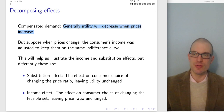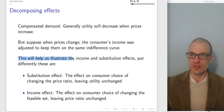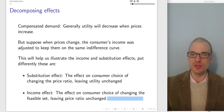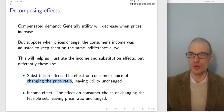We introduced compensated demand in the previous lecture. Generally, utility decreases when the price increases. Suppose when prices change, the consumer's income was adjusted to allow them to remain at the same level of utility — stay on the same indifference curve. This lets us illustrate the income and substitution effect. The substitution effect is the effect on consumer choice of changing the price ratio, leaving utility unchanged. The income effect is the effect on consumer choice of changing the feasible set, leaving the price ratio unchanged — keeping the same slope of the budget constraint. That's how we'll distinguish between the two graphically.